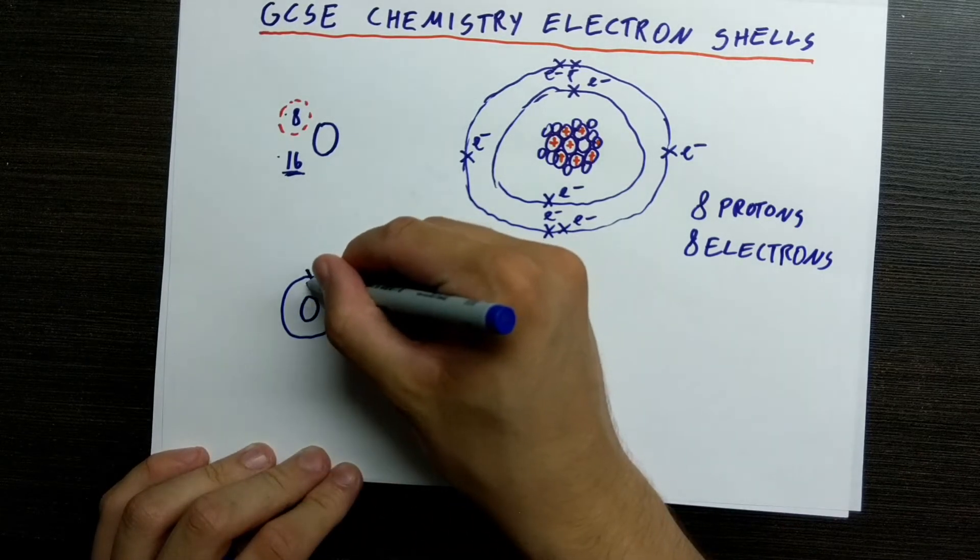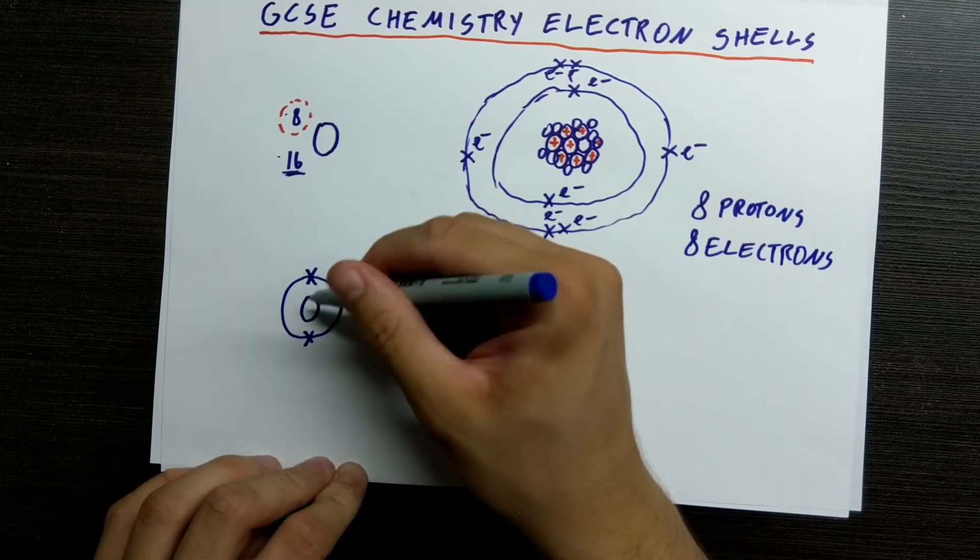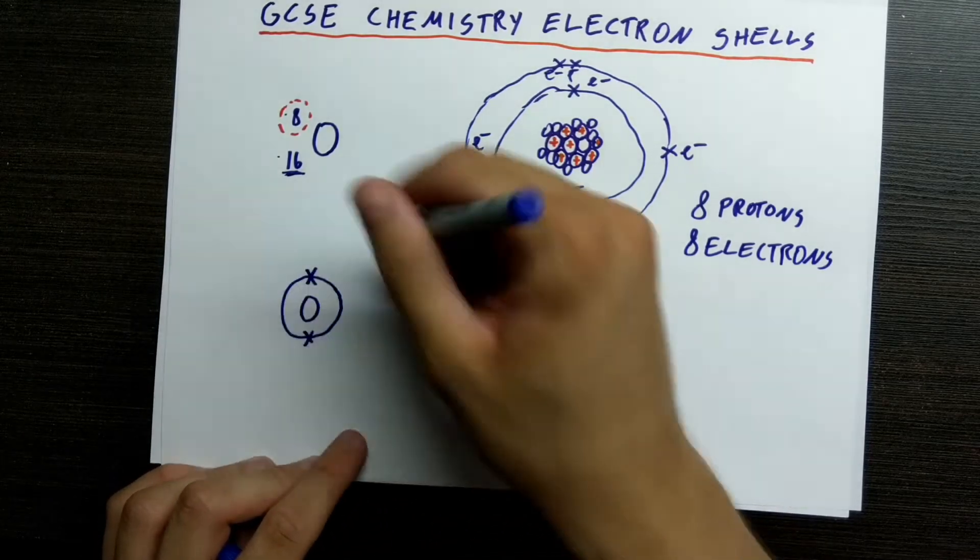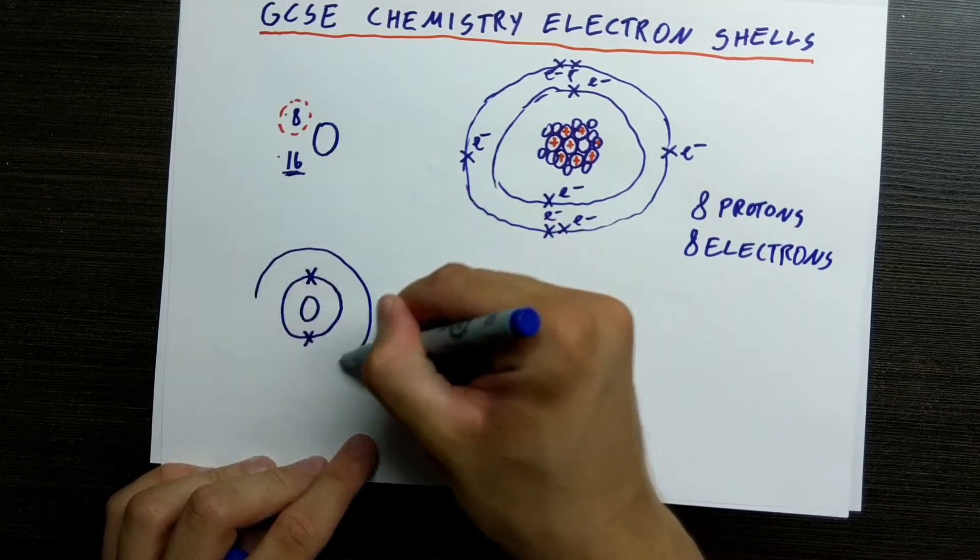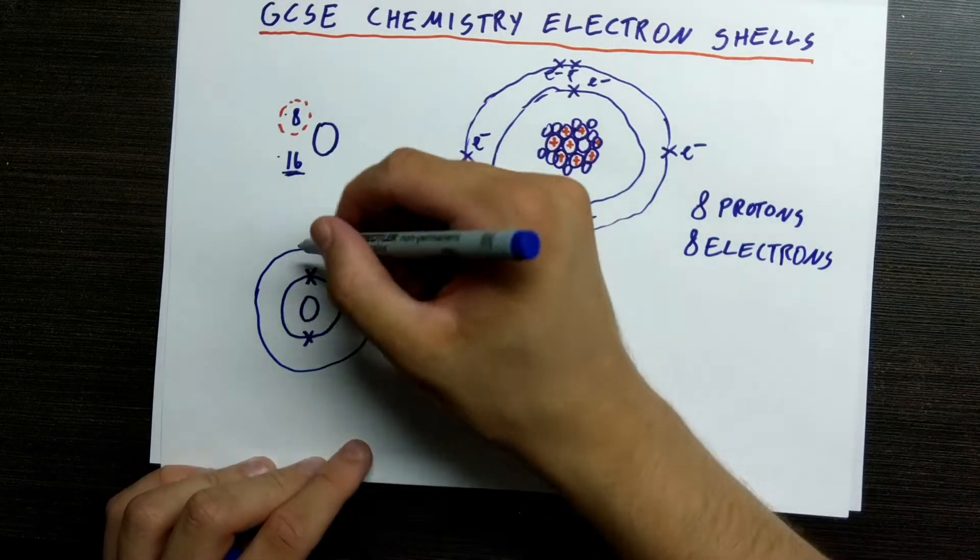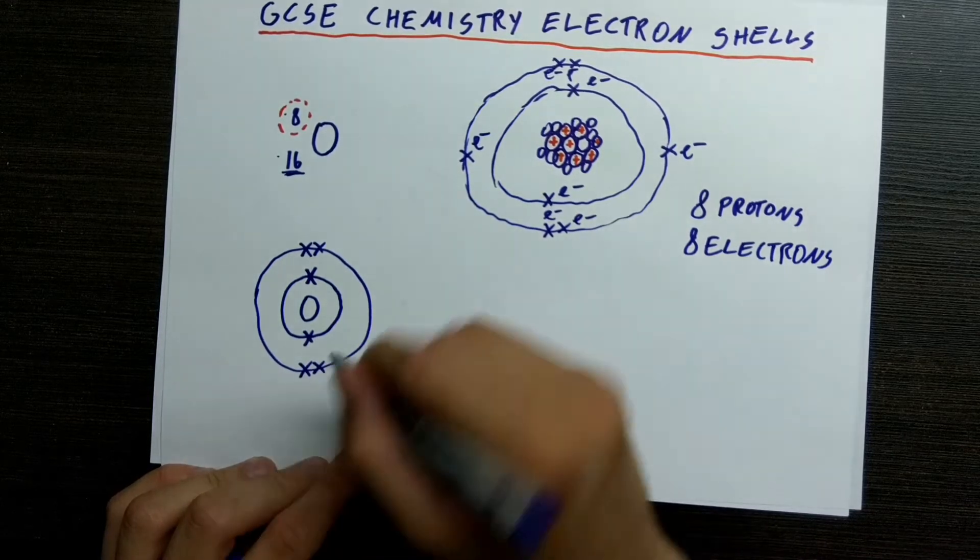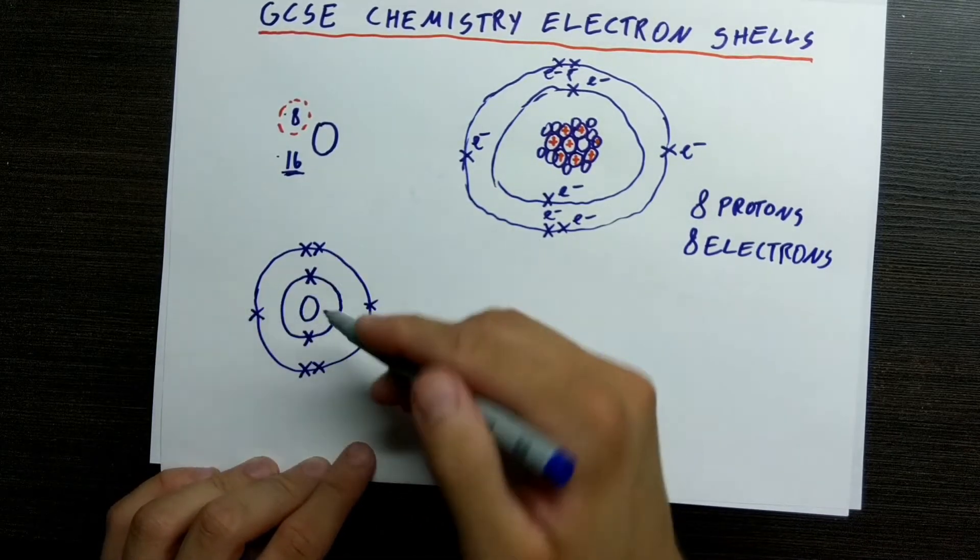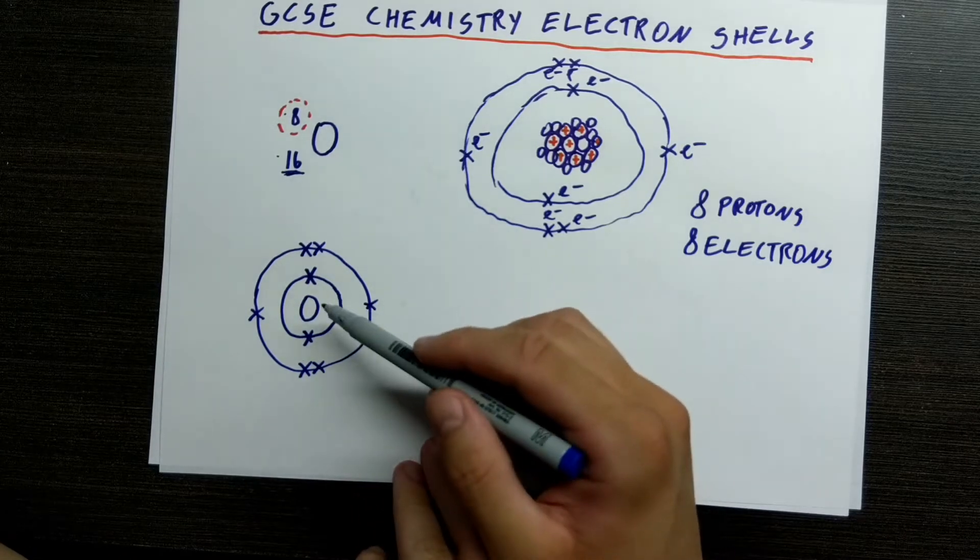They fill their first shell first. And then we go on to fill the next shells. So we would fill this shell like this. That's how we would fill the oxygen atom electron shells.